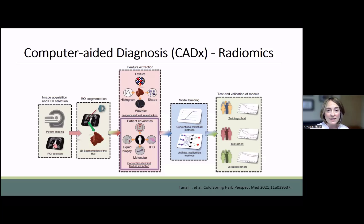The fundamental steps of this process are outlined here. Similar to CAD for nodule detection, this higher-level analysis is performed by software, so it does not require purchase of special machines or use of novel imaging techniques — it uses what is already standard in clinical practice today. The region of interest, in this case a lung nodule, can be manually identified by a radiologist or more commonly machine-identified through a process of automated learning.